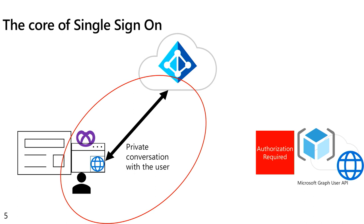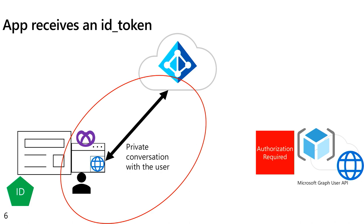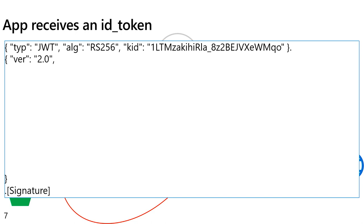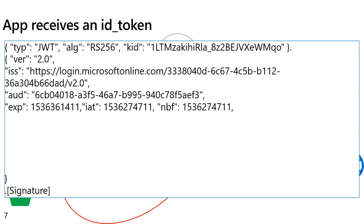The user or the application receives an ID token. An ID token is based on the JWT standard, or a JSON web token. It has a header with a version and a signature. The signature is used to make sure this token is actually coming from Azure Active Directory and not from somebody else. The issuer is one of the claims in the token — this is from microsoftonline.com, your own Azure Active Directory, your tenant ID.